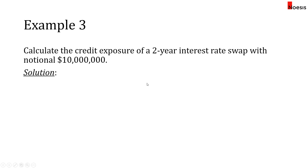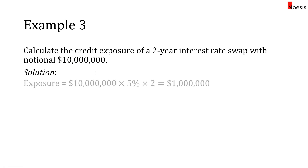Example three: calculate the credit exposure of a two-year interest rate swap with a notional of ten million dollars. For interest rate swaps, every incremental year is five percent, so we take the notional principal of ten million times five percent times two years, giving one million dollars as the exposure.